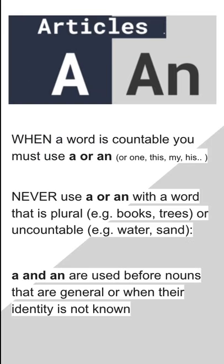We use a and an when a noun is countable. We never use a or an with a plural noun — for example, many books or many trees — or with uncountable nouns.